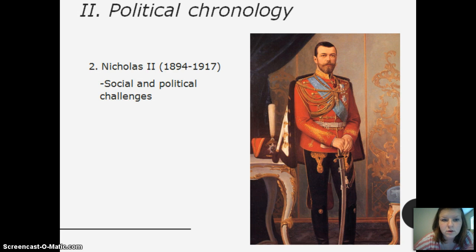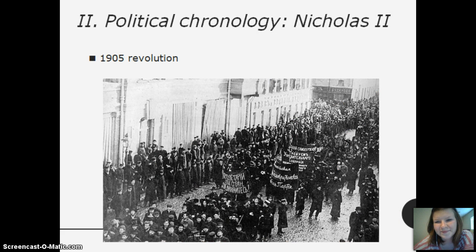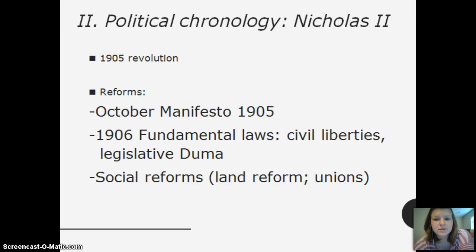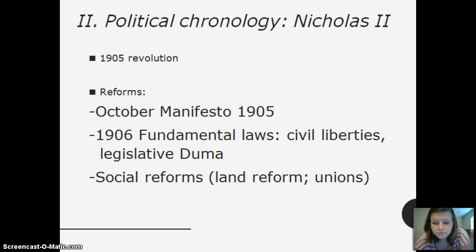Here's the political chronology of Nicholas II. There was the 1905 revolution, then reforms — the October Manifesto of 1905, the 1906 Fundamental Laws — which introduced civil liberties, a legislative Duma, and social reforms.